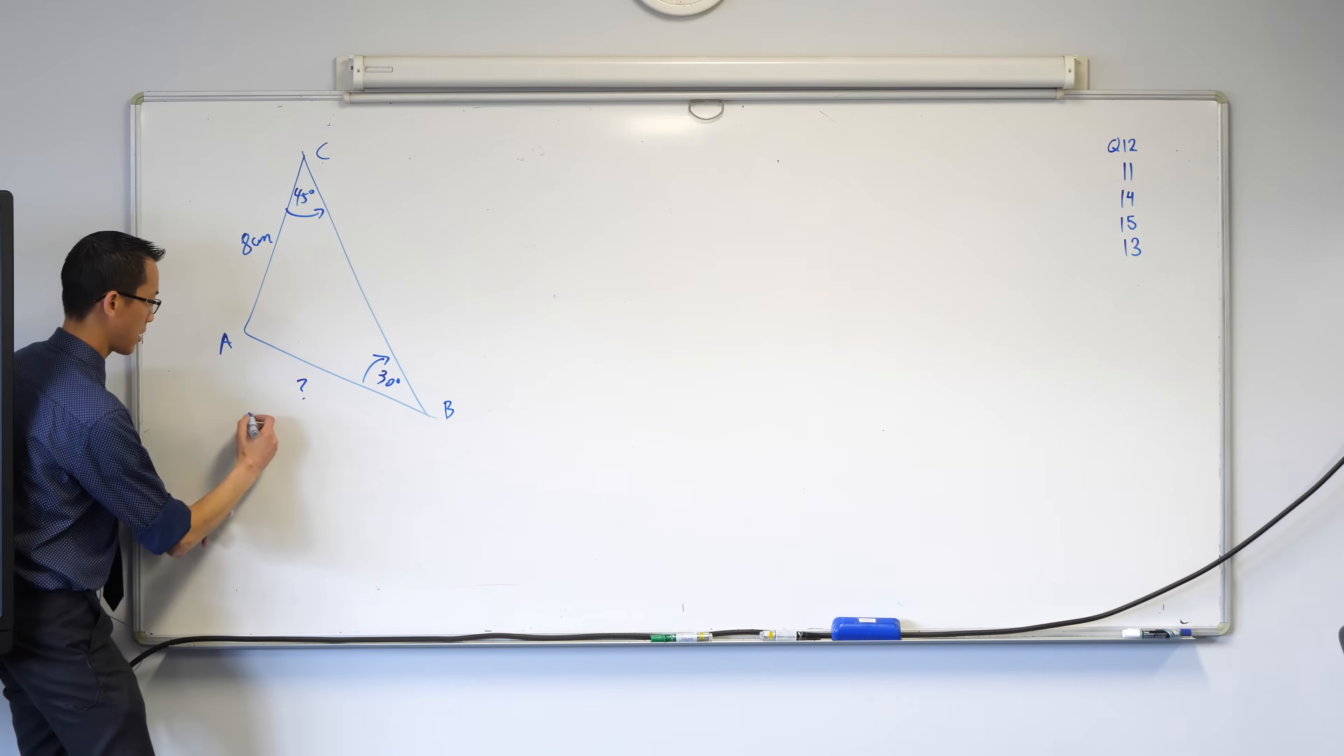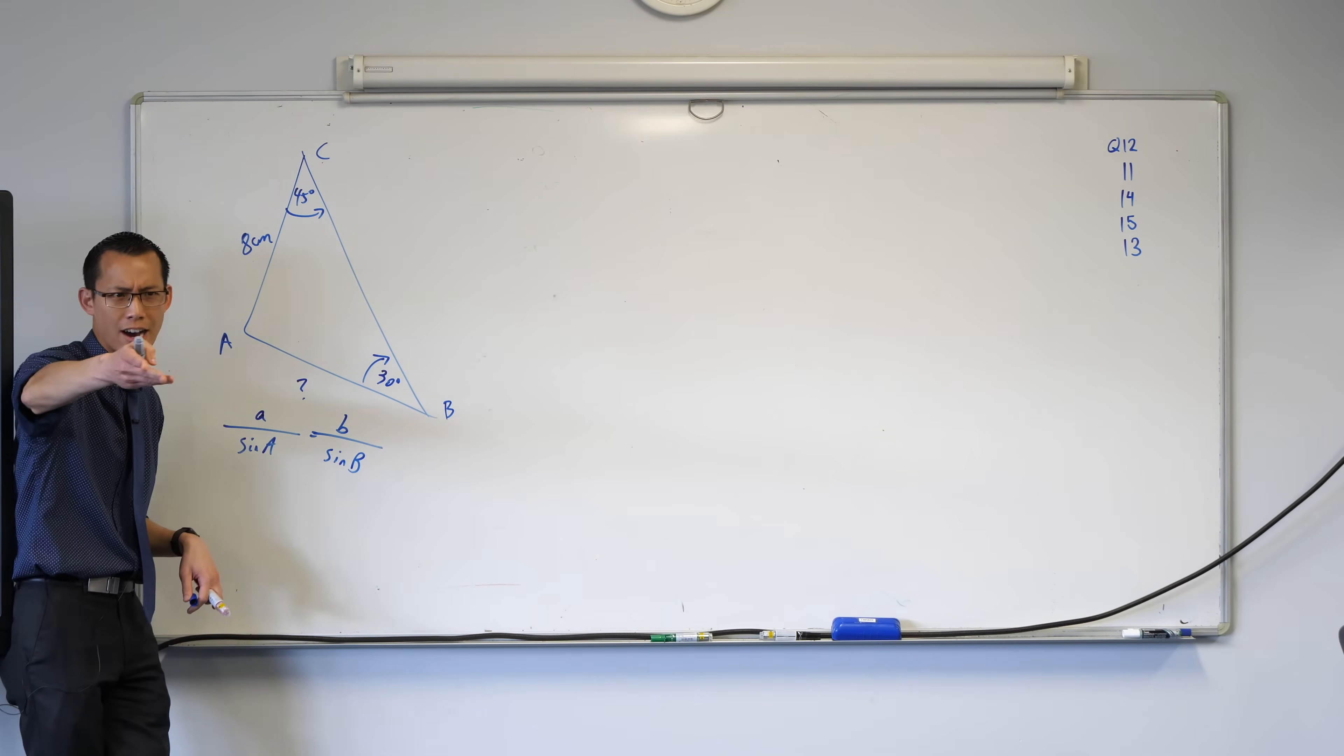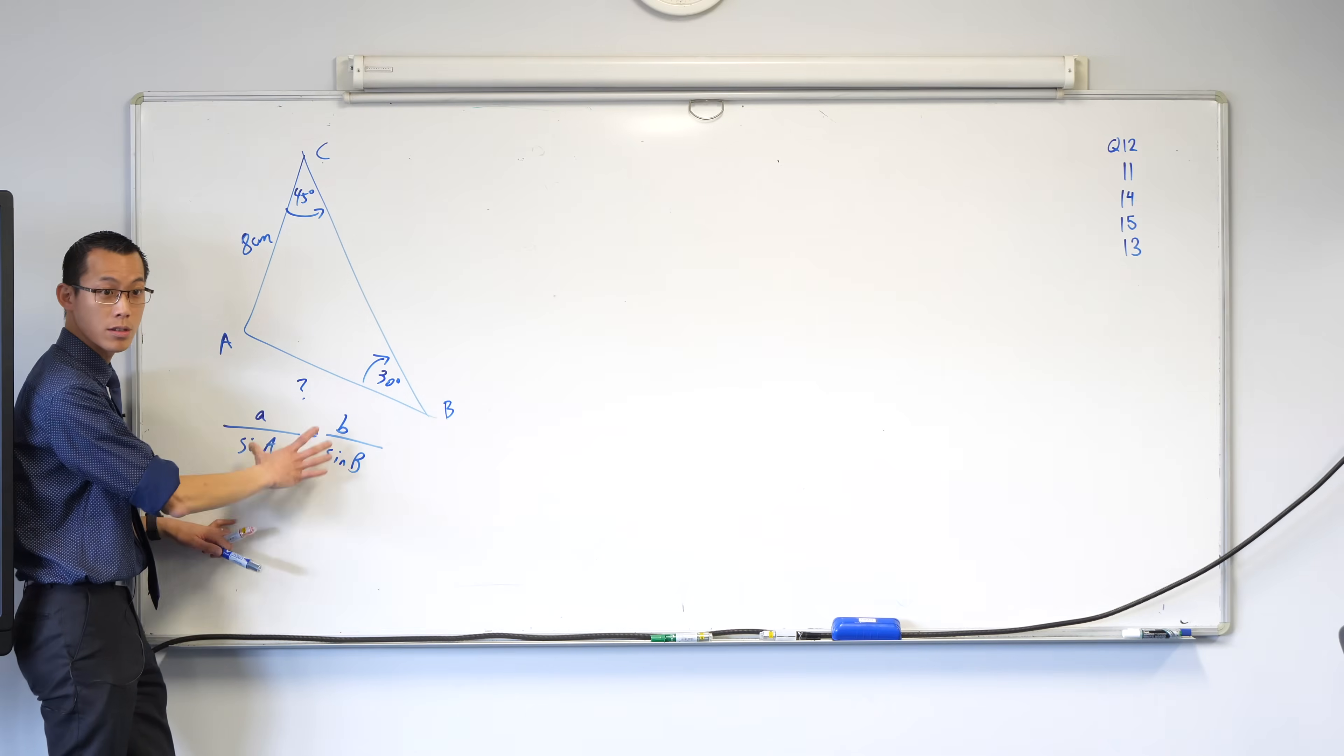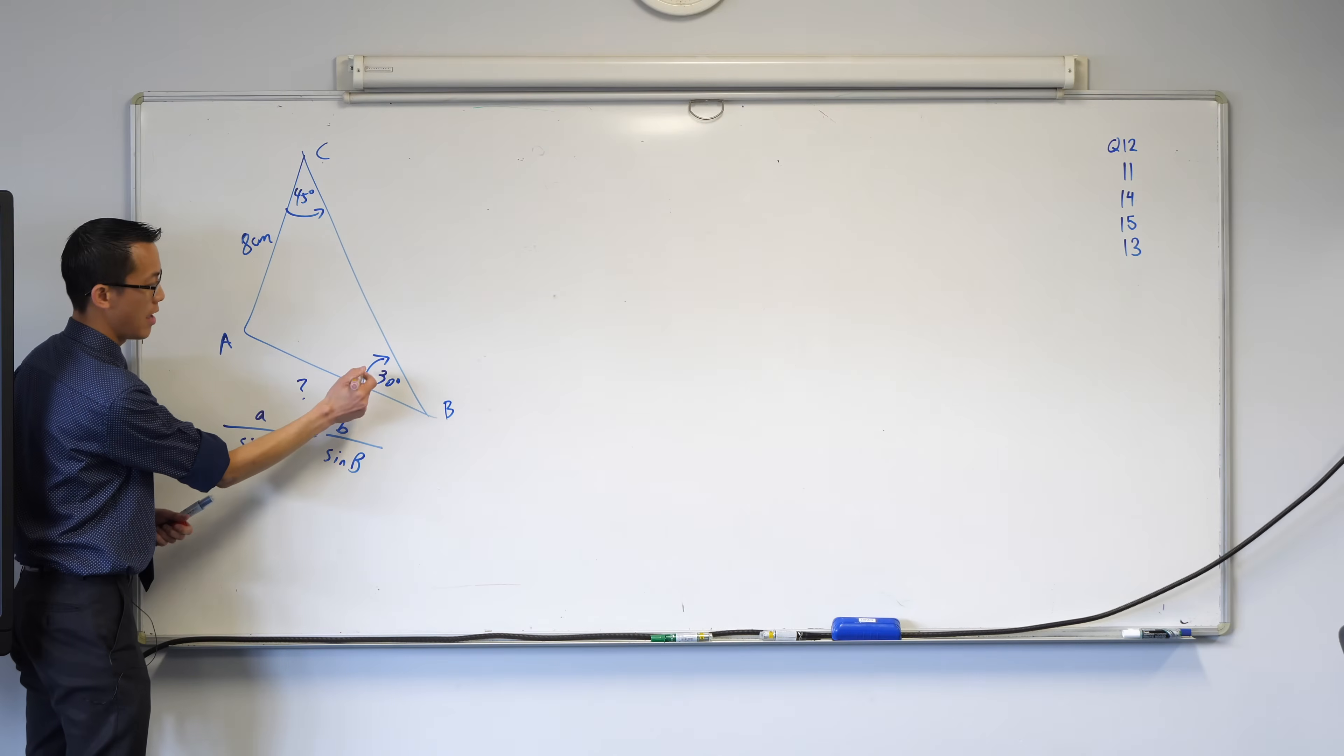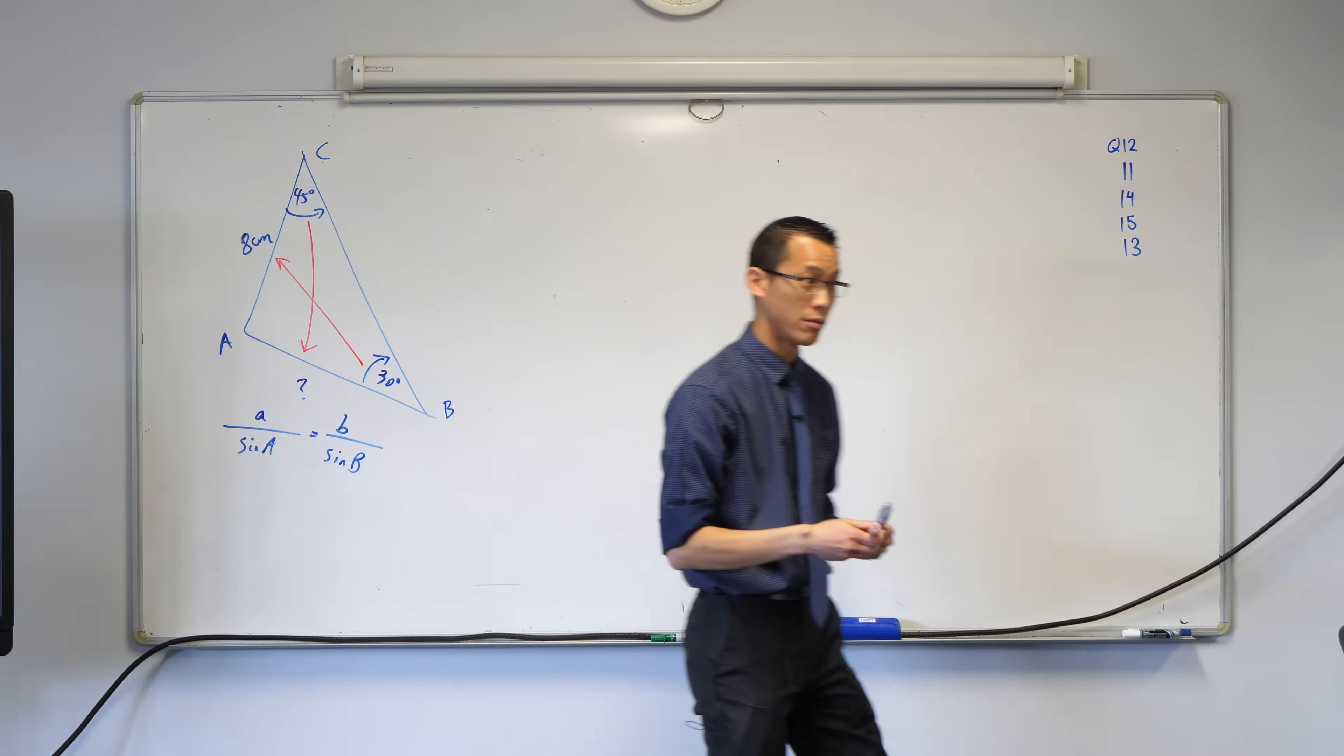You've got the cosine rule and the sine rule on the reference sheet. We would usually write the sine rule something like this: A over sine A equals B over sine B. You can see the knowns and unknowns fit perfectly into what the sine rule presents. I look at it as a shape. Can you see there's an angle opposite a known side, and another angle opposite the unknown side? This crossover shape is your big clue to use the sine rule.